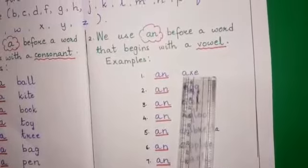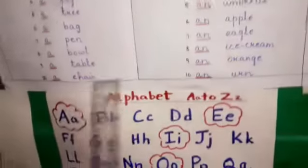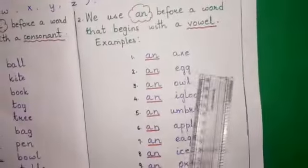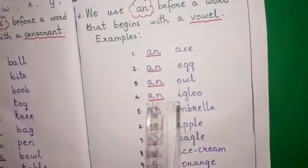So, examples: an axe. A, the first letter, is a vowel. An egg, an owl, an igloo.